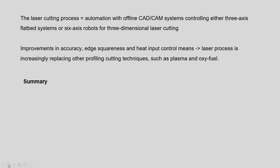When we want to implement laser cutting, we need a CAD/CAM system. First, we model the geometry using CAD software and then generate the CNC part program using CAM software. Various CNC machine tools are available with capability to move in XYZ directions — three-axis movement — or industrial six-axis robots are employed in the industry along with laser technology for cutting or welding purposes. As far as process performance is concerned, improvement in accuracy, edge squareness, and heat input control are essential to get the required performance during the laser cutting operation.